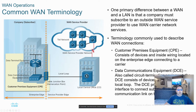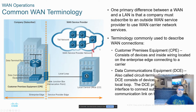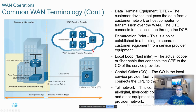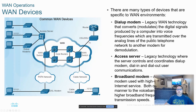Typically a router or a layer three switch connects to the provider. If there is a special device like a modem, then that would be functioning as the DCE. From the central office, you enter into the service provider network itself. These are the traditional terms used in WAN labeling, and there's some further explanation of them in the chapter.